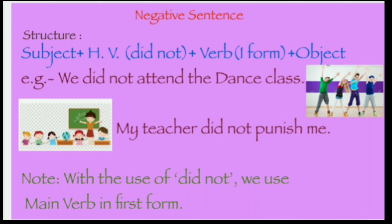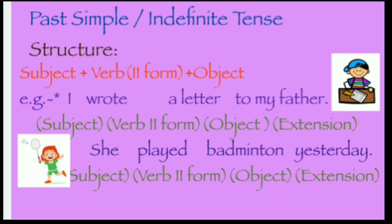A very common mistake students make while forming past simple negative sentences is forgetting to change the verb from second form to first form. Remember: use 'did not' and then the first form of the verb. So 'I wrote a letter to my father' becomes 'I did not write a letter to my father.' 'She played badminton yesterday' becomes 'She did not play badminton yesterday.' So 'wrote' converts to 'write' and 'played' changes to 'play.'